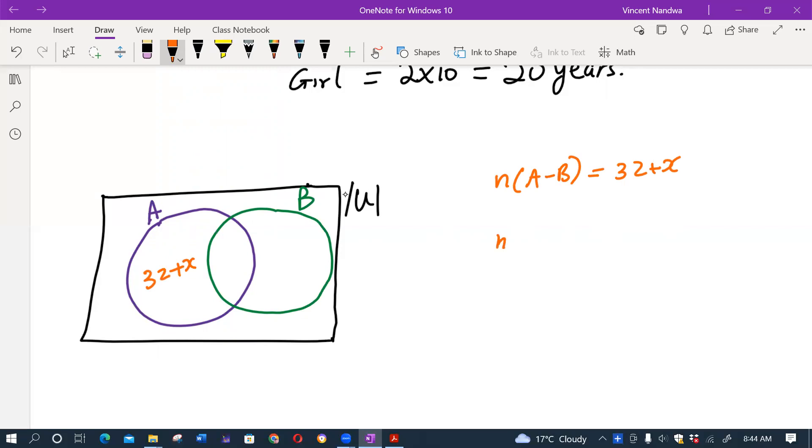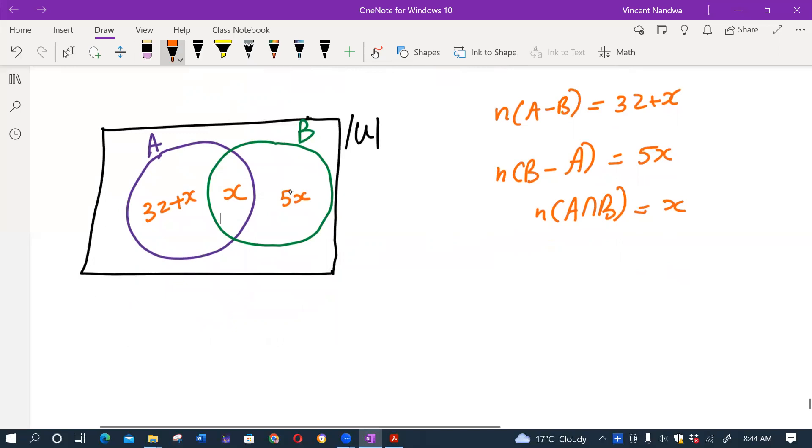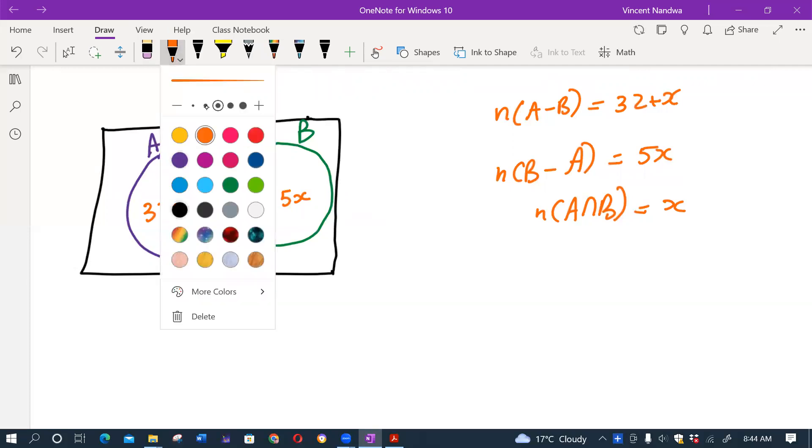And I've also been told that cardinality of B minus A is given by 5x, so this will be 5x. And the intersection where the two circles meet—that's cardinality of A intersect B, which is x. So that's the Venn diagram with the given information.